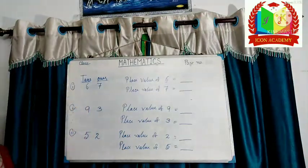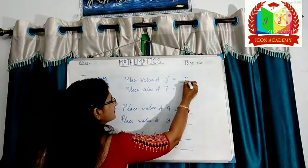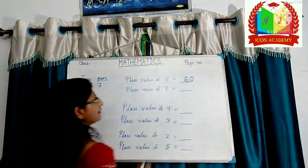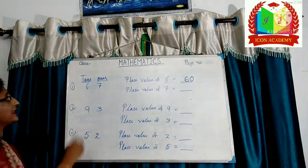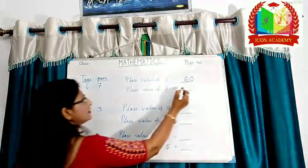Six tens place. So, six tens equal to sixty. And what is the place value of seven? Seven is seven.